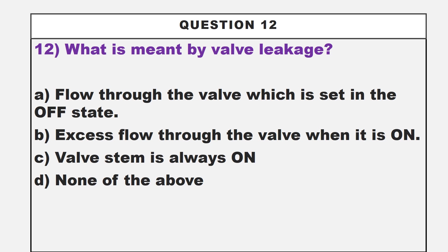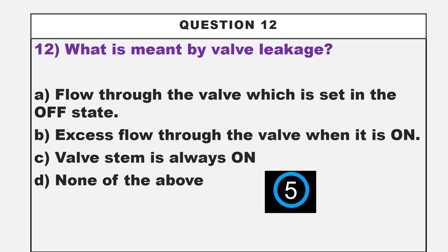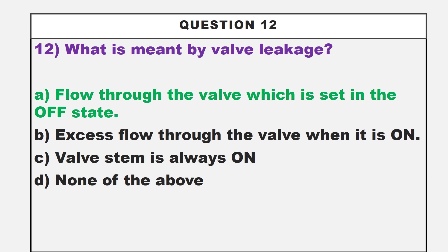This is our twelfth question. What is meant by valve leakage? Option A: flow through the valve which is set in the off state. Option B: excess flow through the valve when it is on. Option C: valve stream is always on. Option D: none of the above. The correct answer is option A, flow through the valve which is set in the off state.